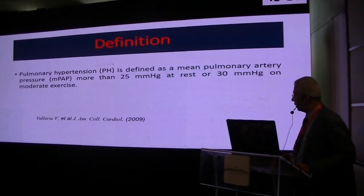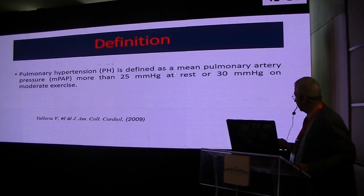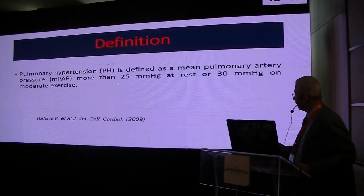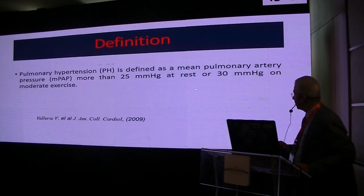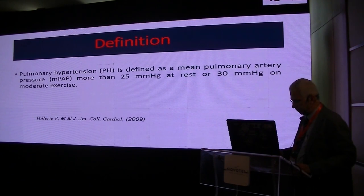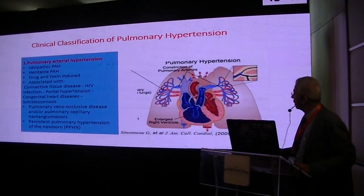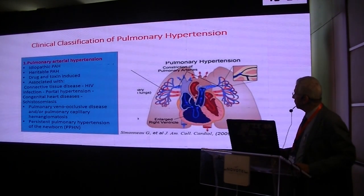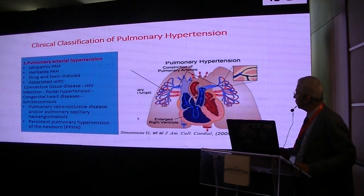By definition, pulmonary hypertension is defined as a mean pulmonary artery pressure more than 25 mmHg at rest, or 30 mmHg on moderate exercise. These are the classifications of pulmonary hypertension.